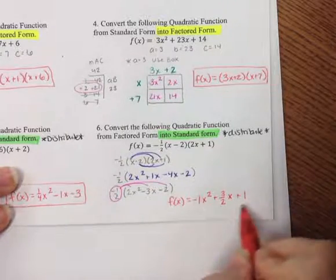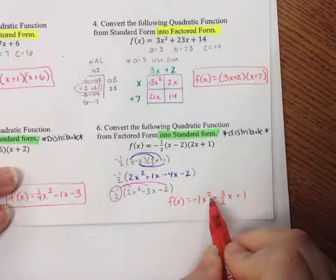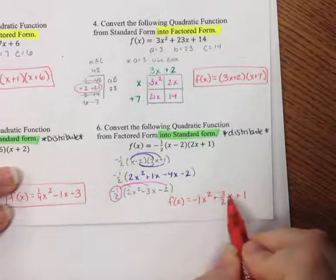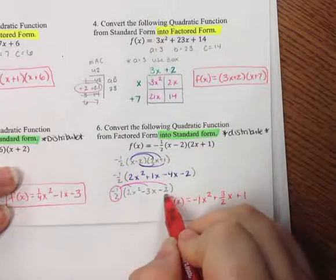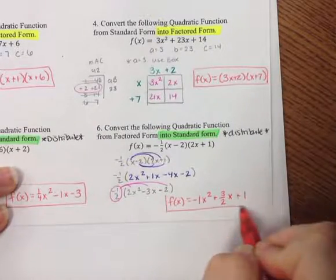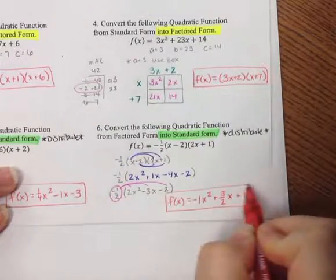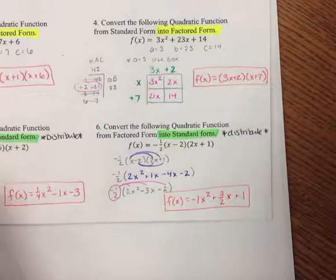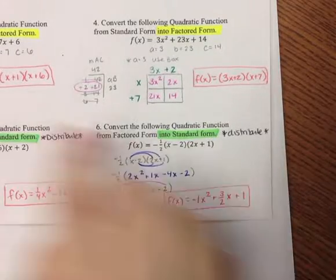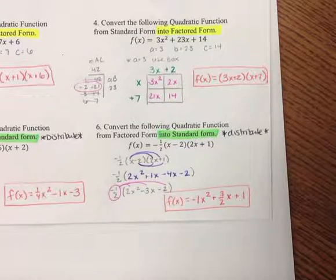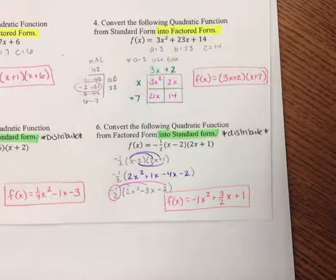There are no parentheses left and it is in standard form: f(x) = −x² + (3/2)x + 1. You can also check whether they've been converted correctly by graphing both forms and seeing if they share the same graph.